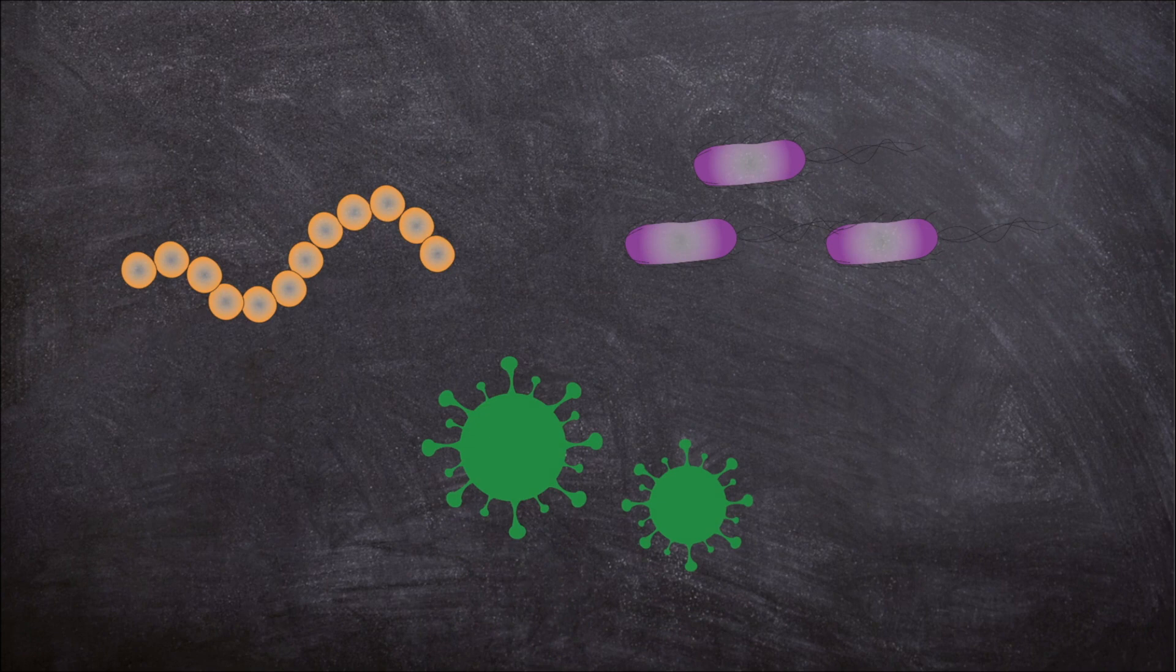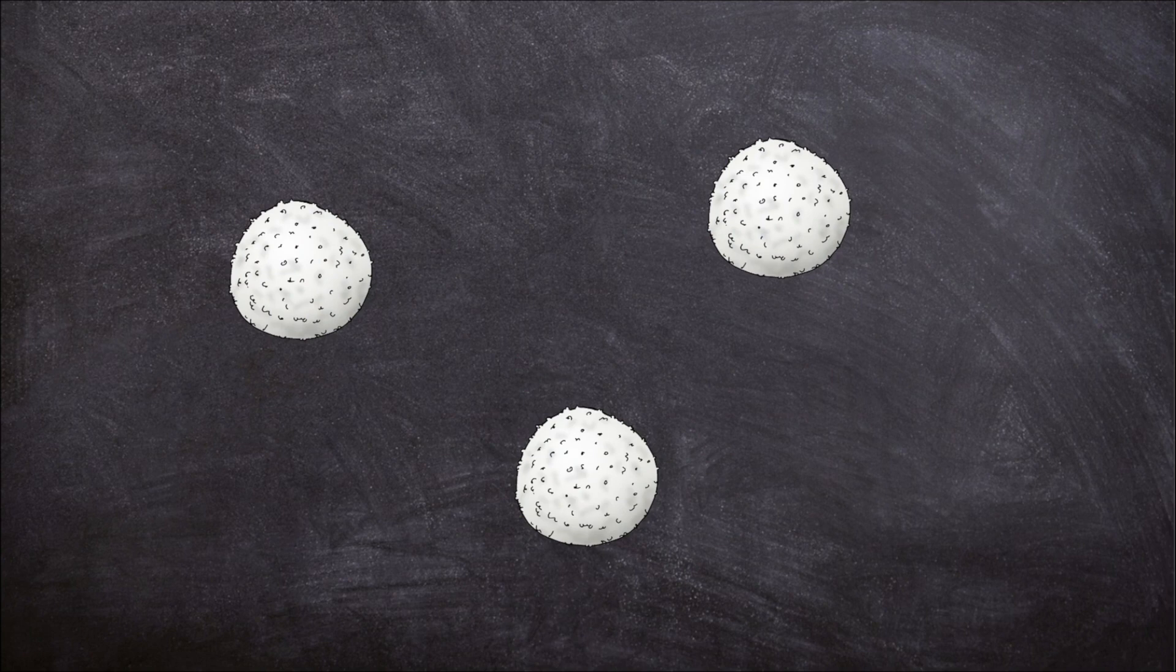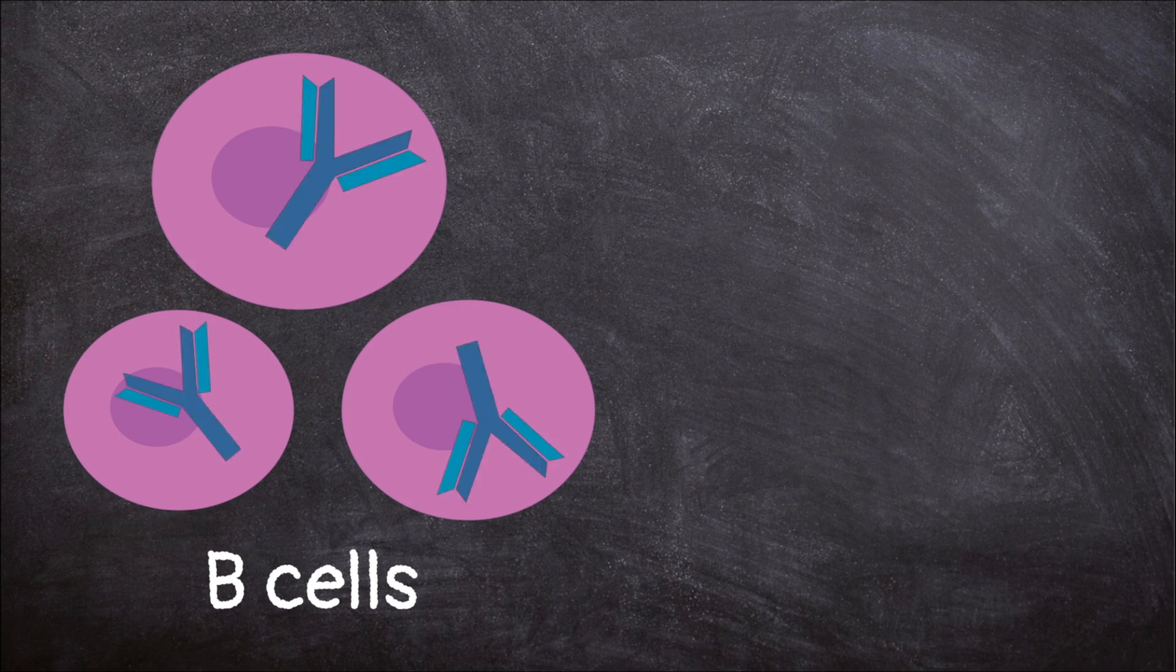Think of the white blood cells like soldiers in your body's army. There are different types of white blood cells with their own special jobs. B cells create proteins called antibodies, which attack and destroy the antigens invading your body.